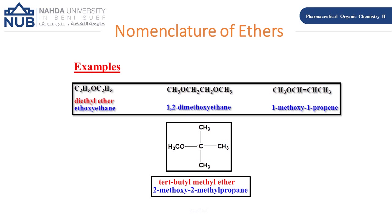For CH₃-OCH₂CH₂-OCH₃, the IUPAC name is determined by choosing CH₂CH₂ as the parent chain (ethane), with methoxy groups on C1 and C2, giving 1,2-dimethoxyethane. For CH₃-O-CH=CH-CH₃, the parent chain is CH=CH-CH₃ (propene), numbered from C1, giving 1-methoxy-1-propene.